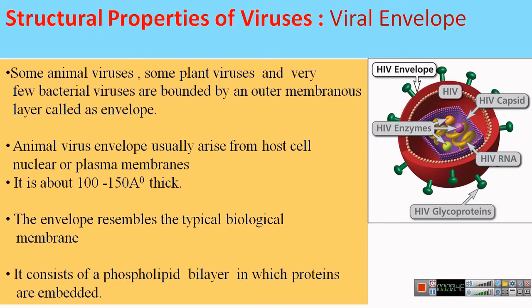What is a viral envelope? Some animal viruses, some plant viruses, and very few bacterial viruses are surrounded by an additional membranous layer called the envelope. Within the structure of viruses, at the center there is the genetic material or genome, surrounded by a proteinaceous coat called the capsid. In some viruses, that capsid is in turn surrounded by an additional membrane called the viral envelope. It is mainly present in animal viruses, but some plant viruses and very few bacterial viruses also show its presence.